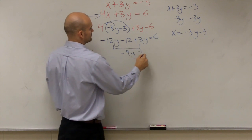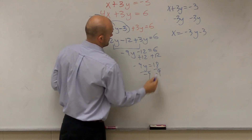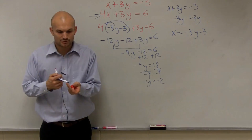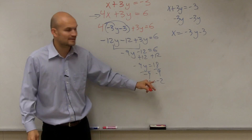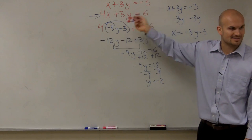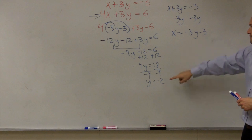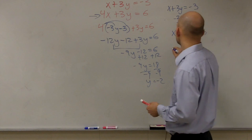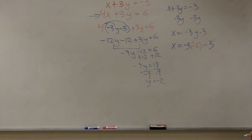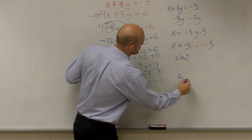The value of y equals negative 2. Now I need to find x. Since I already solved x equals negative 3y minus 3, I plug in y equals negative 2: x equals negative 3 times negative 2 minus 3, which is 6 minus 3, so x equals 3. The coordinate point is (3, negative 2).